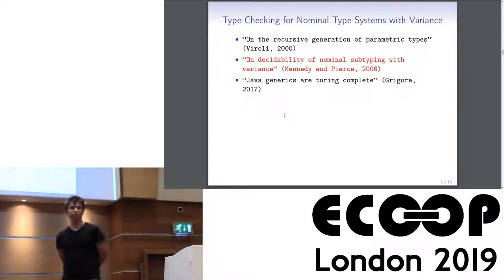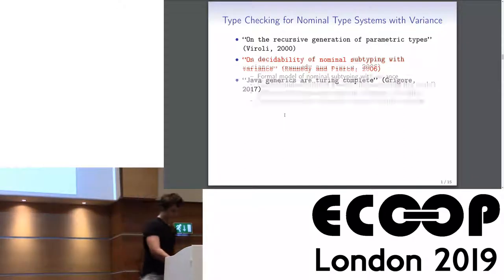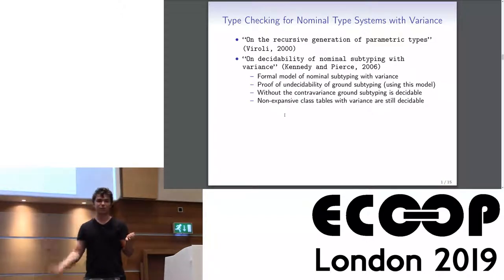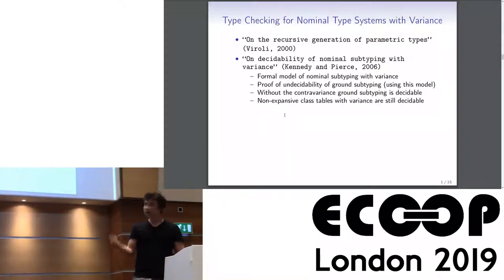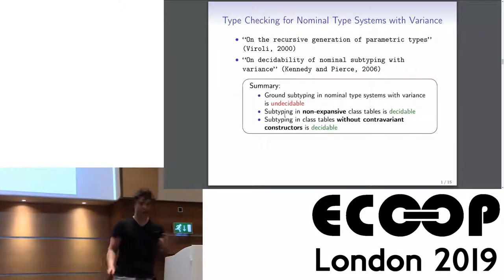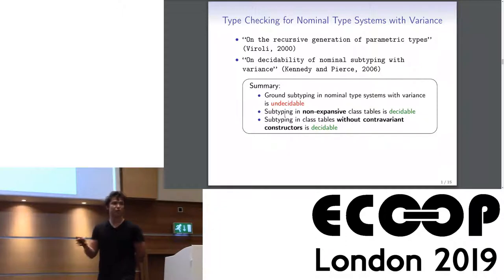Kennedy and Pierce published a foundational paper defining a concise formal model of pure nominal subtyping with variance — the model used in Radu's paper and in our work as well. They proved there is no algorithm that takes two ground types and always terminates while deciding if one is a subtype of another. They also noted that if we throw away contravariance, the subtyping relation becomes decidable.